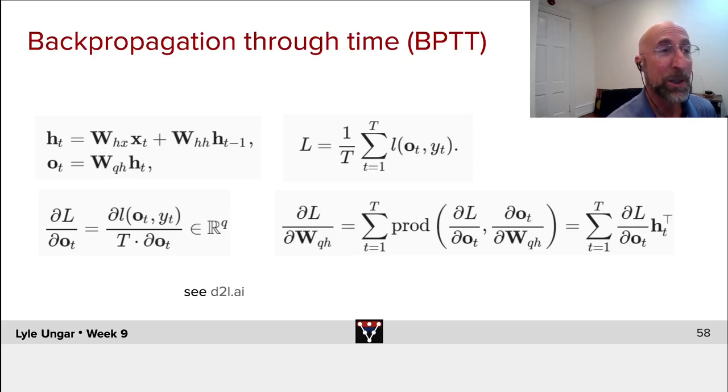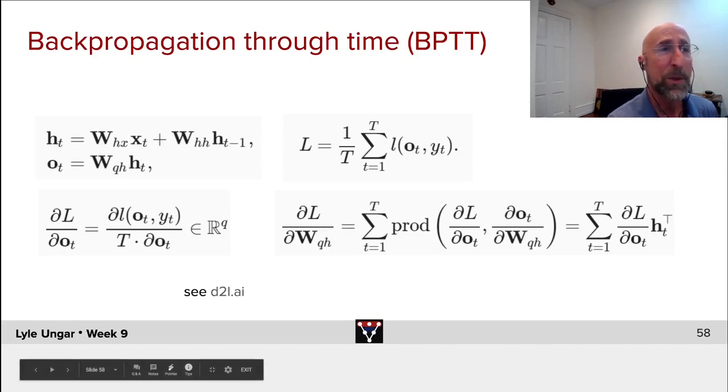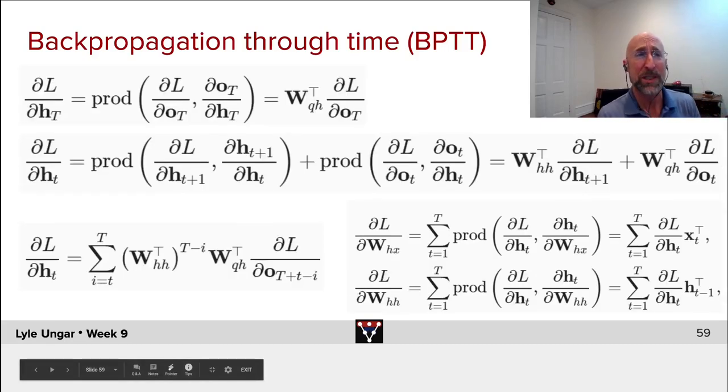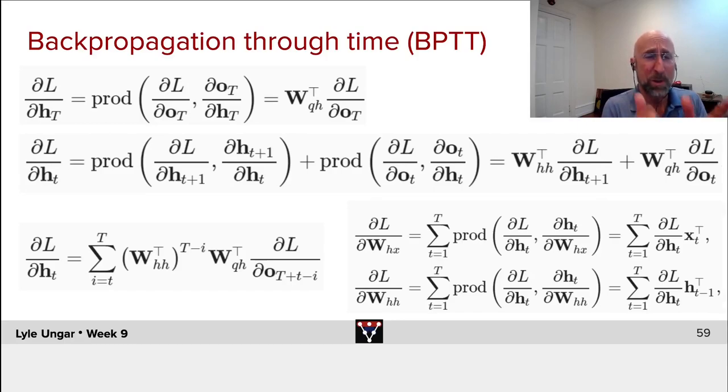Each of the hidden nodes and the outputs have some sort of a function. You take a gradient, you use the chain rule. The problem is, as you start doing more and more weights and more and more layers and more and more unrolling, you get chain rules of chain rules of chain rules, and it gets messy.